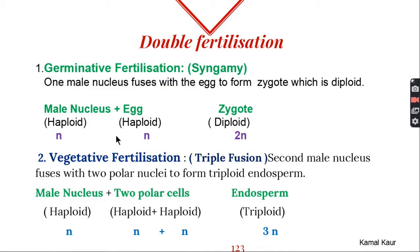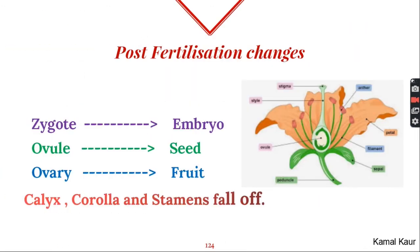During double fertilization zygote and endosperms are formed. Now let's see what happens after this double fertilization. Zygote formed during the germinative fertilization changes into the embryo which is the baby plant and the endosperm which is formed during the vegetative fertilization surrounds this embryo and provides it with the nourishment because endosperm is rich in fats, oils and proteins. Ovule then changes into seed and ovary changes into the fruit. So inside the fruit seed is present and inside the seed embryo or the baby plant is present.